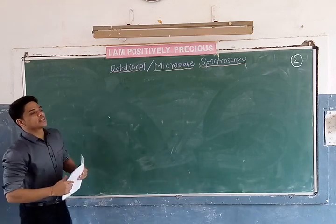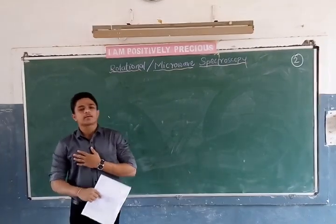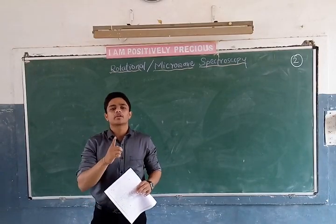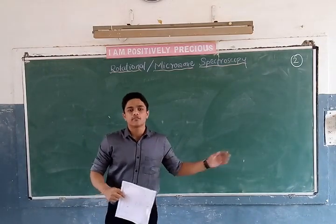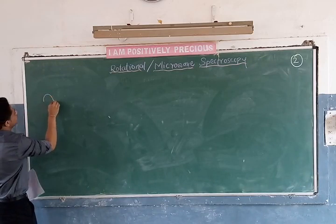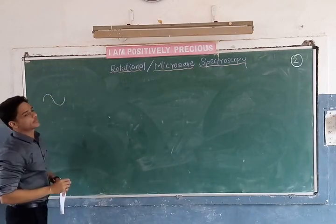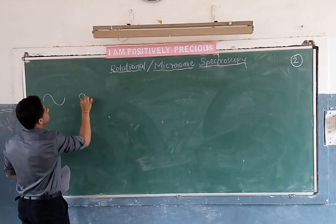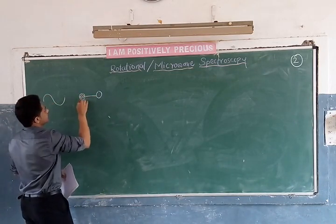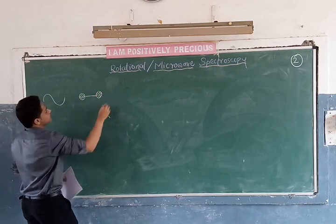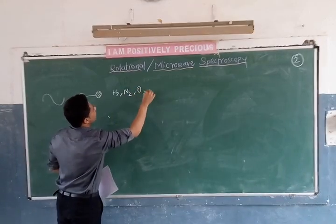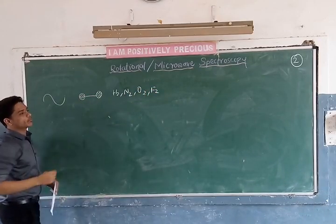In rotational spectroscopy, we are going to determine the bond length of the molecule. For us, we have a rigid rotator diatomic molecule, which will be discussed further. This is a microwave, and we have RC. This is a diatomic molecule — say H2 or N2 or O2 or F2. It is a diatomic molecule.